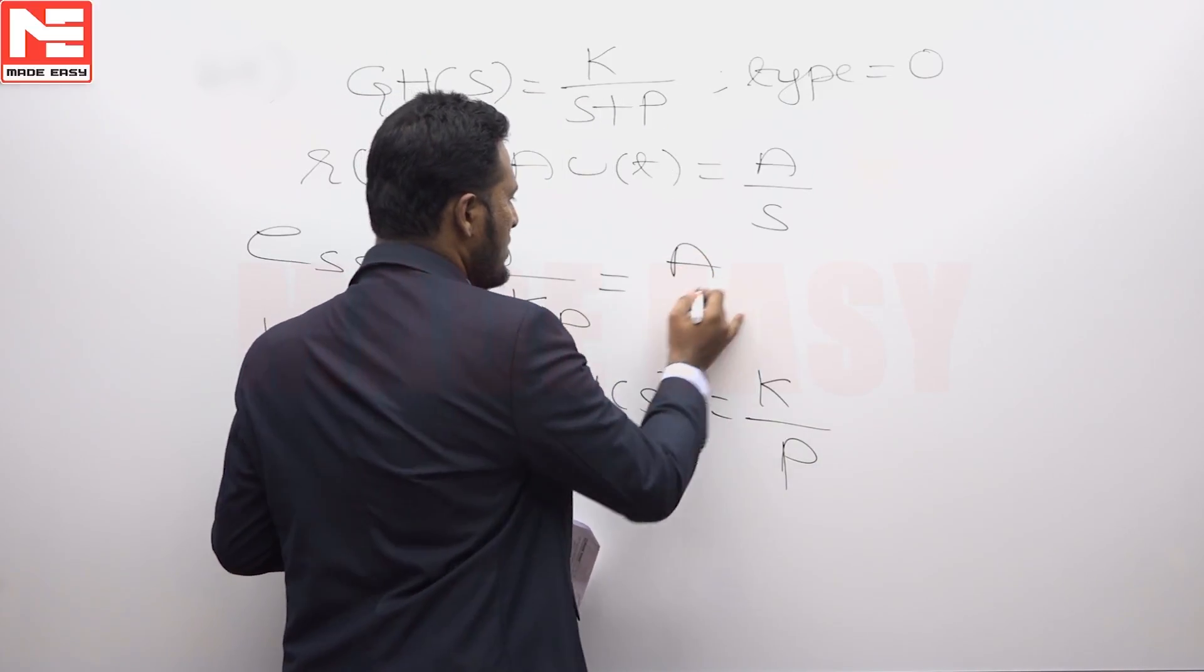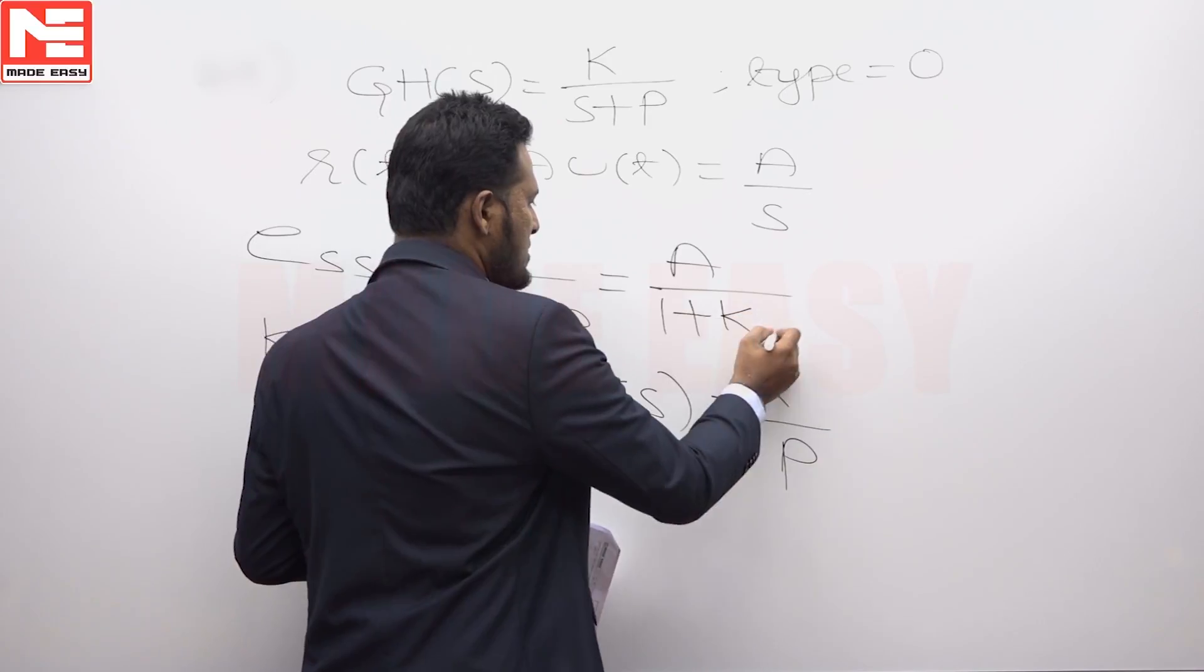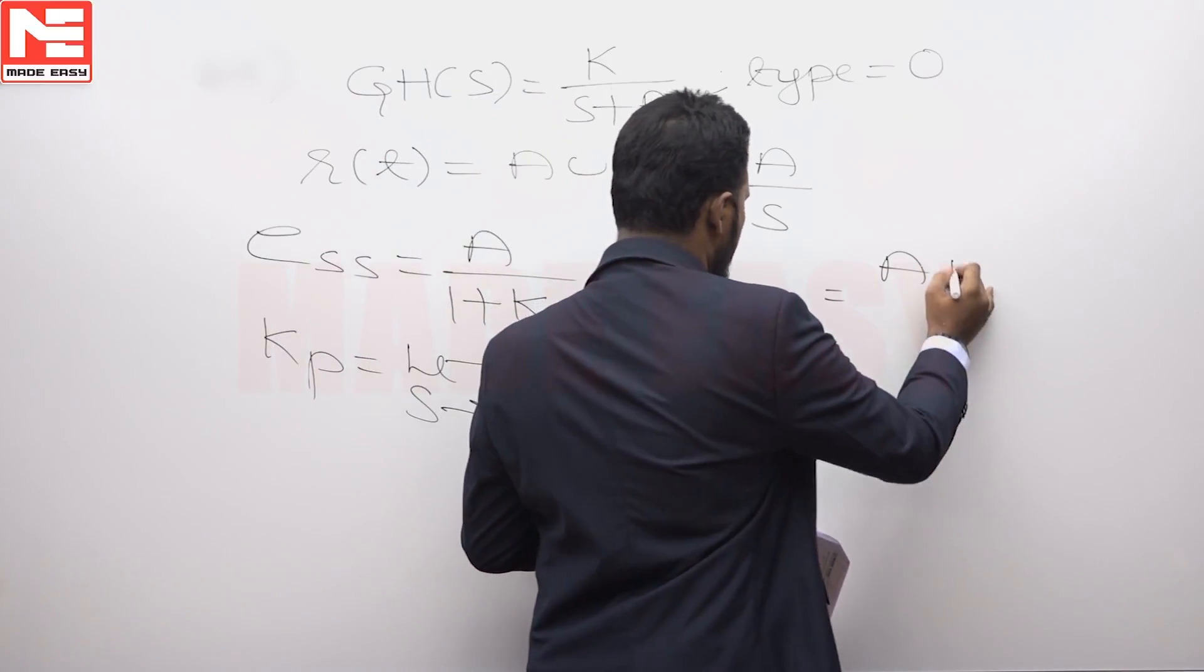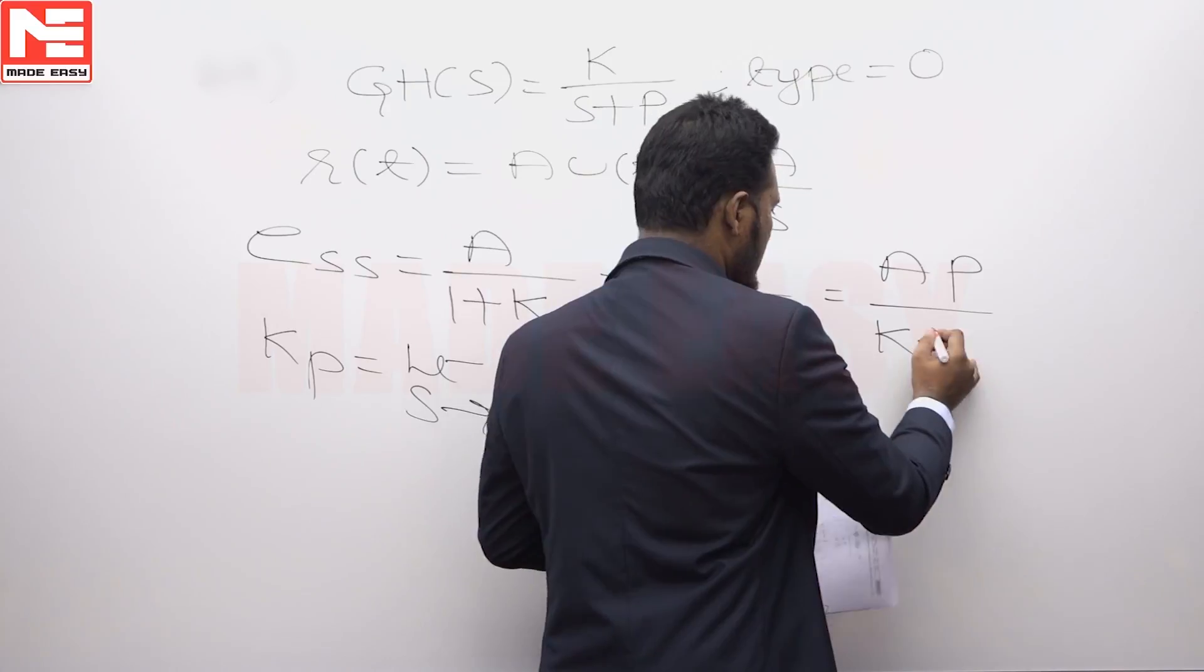So, steady state error: A by 1 plus K by P, equals A P upon K plus P.